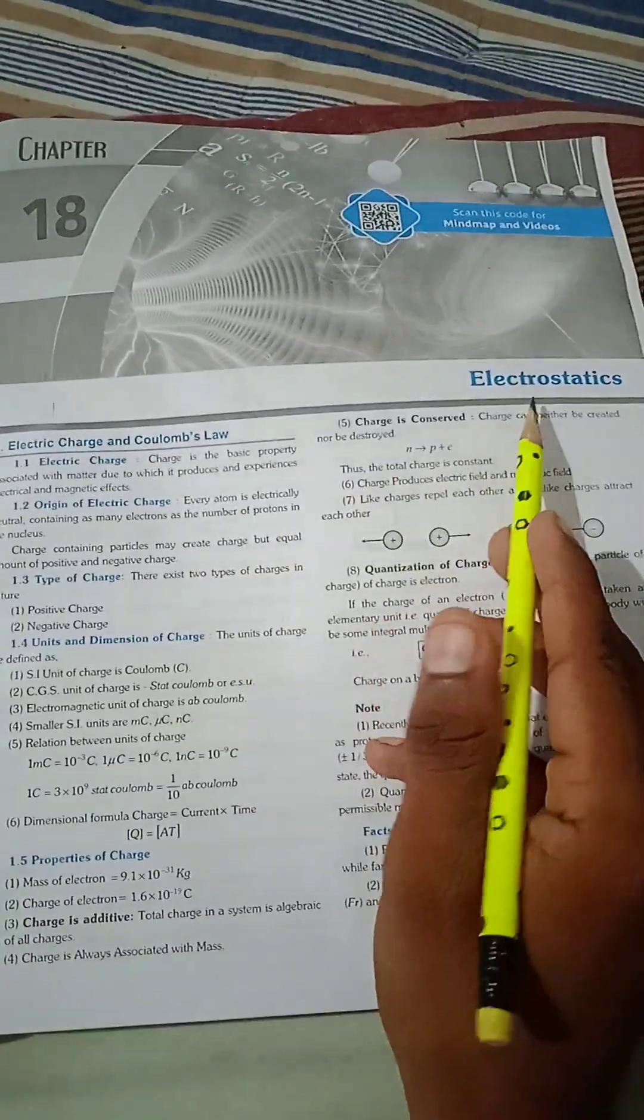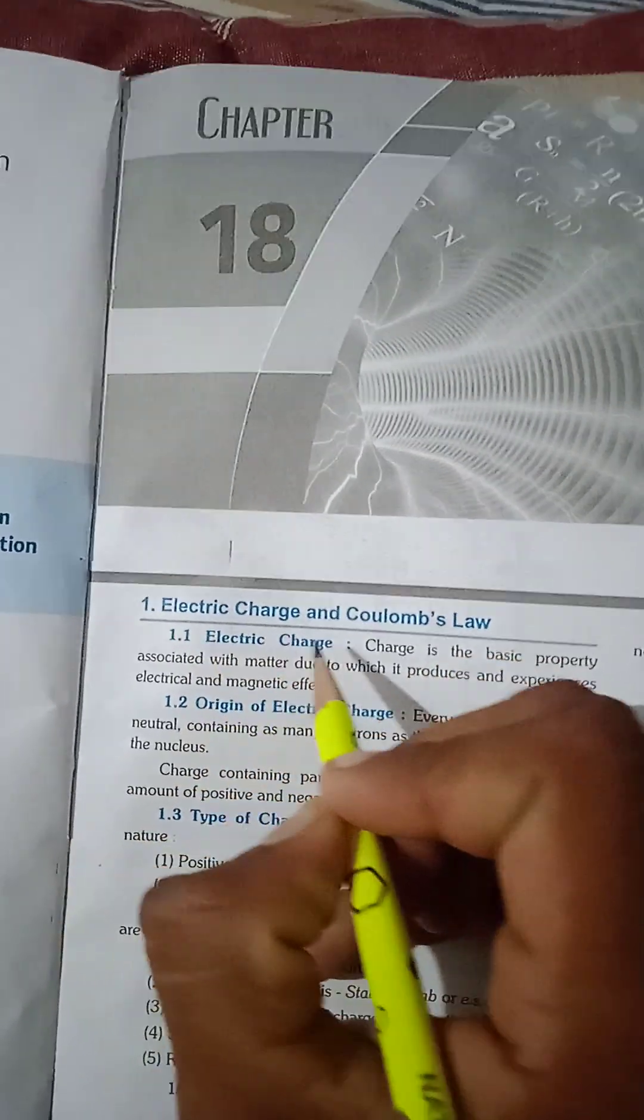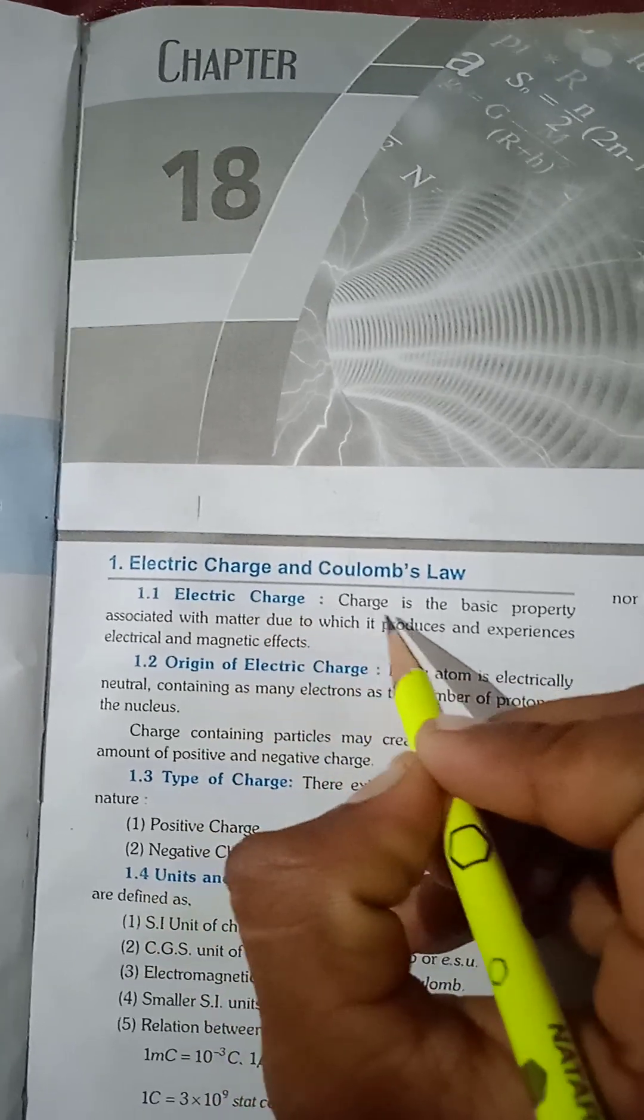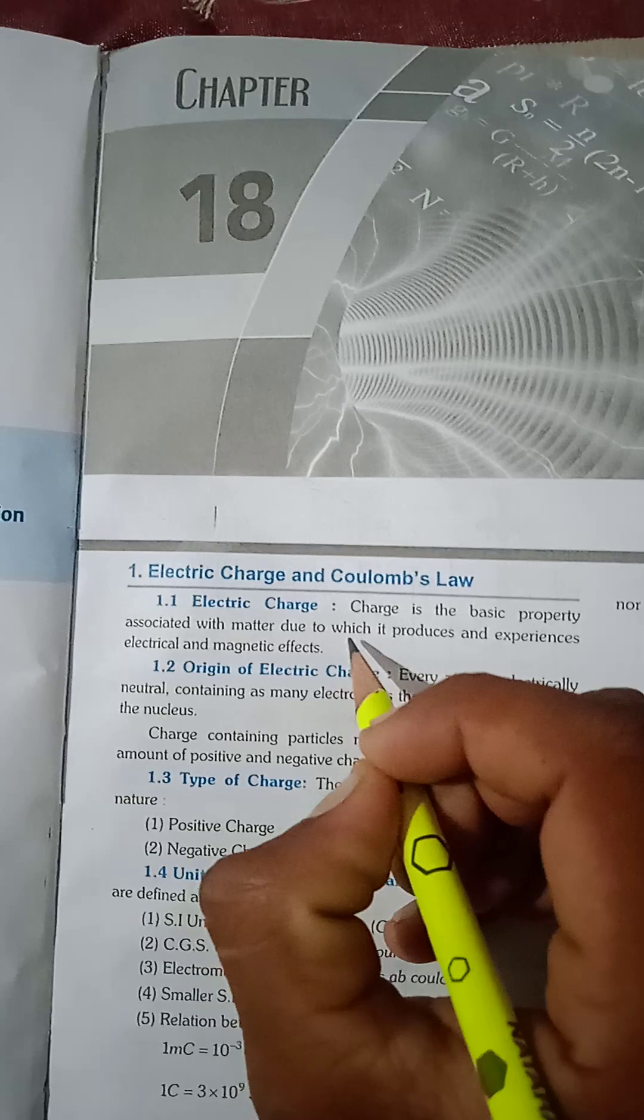Chapter Number 18: Electrostatics. Electric Charge and Coulomb's Law. Electric charge is the basic property associated with matter due to which it produces and experiences electric and magnetic effects.